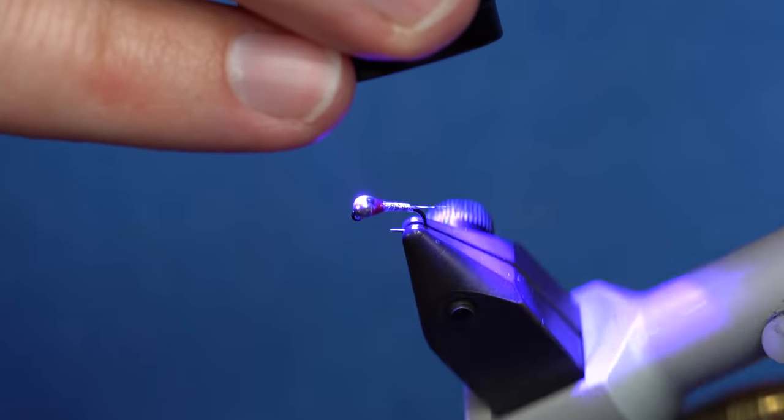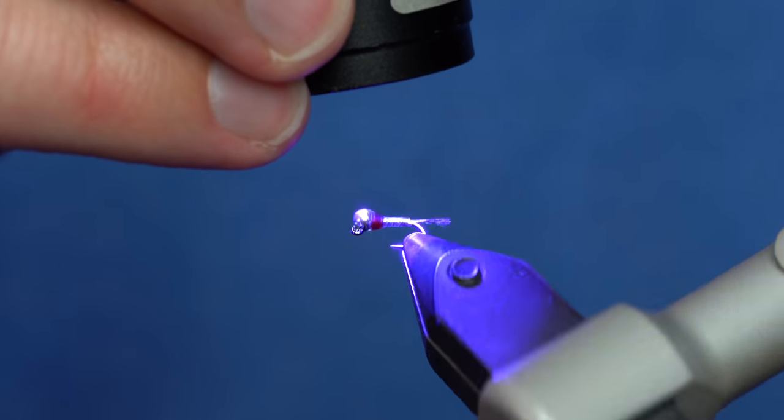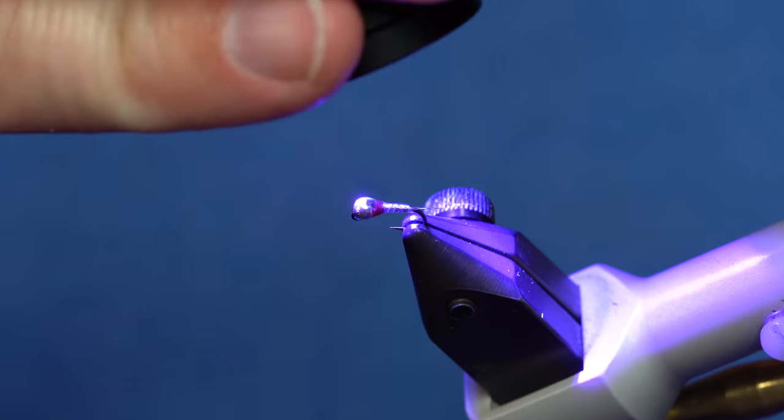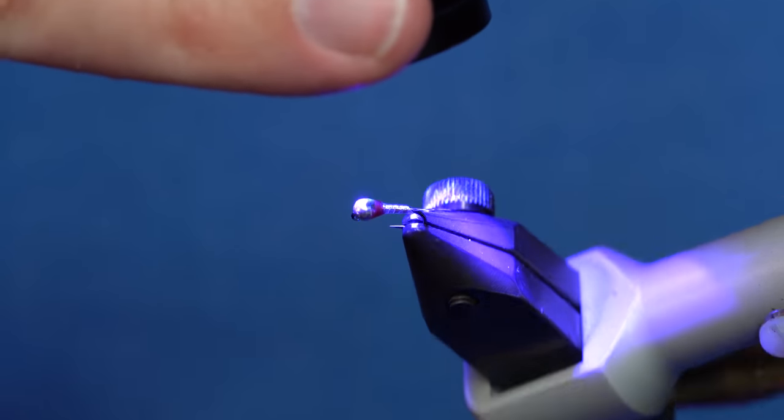This is the Loon Infinity Light, which is a really powerful rechargeable battery. You can save yourself some money by not buying several inexpensive lights and just buy one good one. Get this one or the Plasma from Loon. They're awesome.